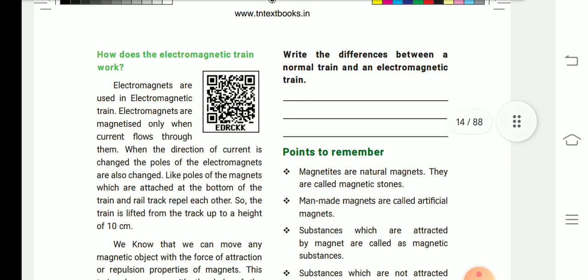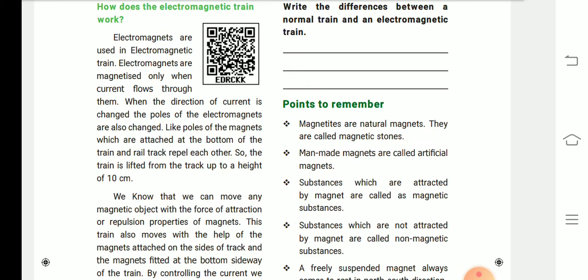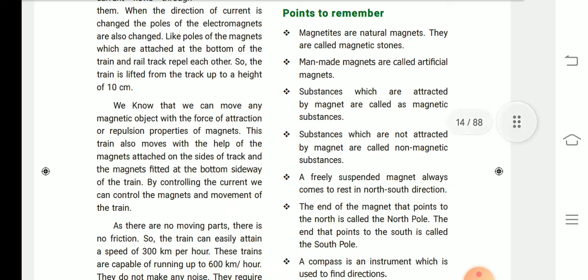How does the electromagnetic train work? Electromagnets are used in electromagnetic trains. Electromagnets are magnetized only when current flows through them. When the direction of current is changed, the poles of the electromagnets are also changed. Like poles of the magnets, which are attached to the bottom of the train and rail track, repel each other.